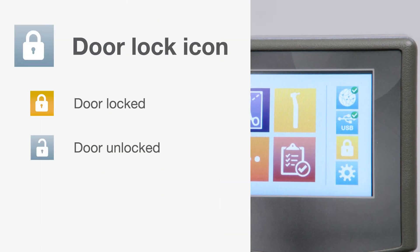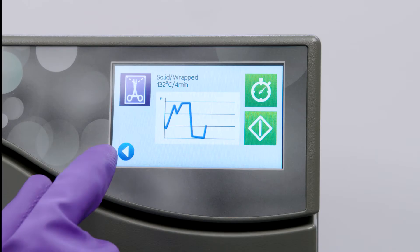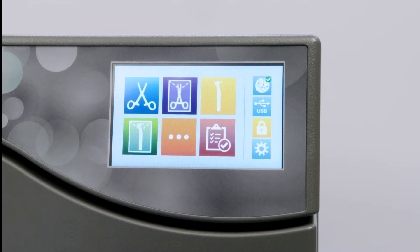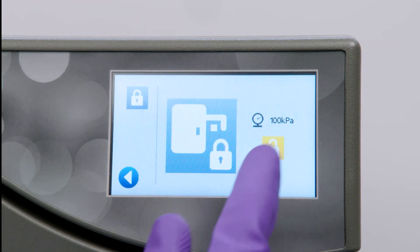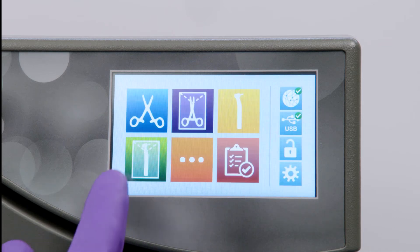The lock icon will indicate if your door is locked or unlocked. The StatClave will lock the chamber door when you select a cycle. If you need to unlock the door before starting the cycle, press the back arrow to return to the main menu. Press the lock icon and press the yellow unlock button. You will hear the door lock release and you can then hit the back arrow and open the door.